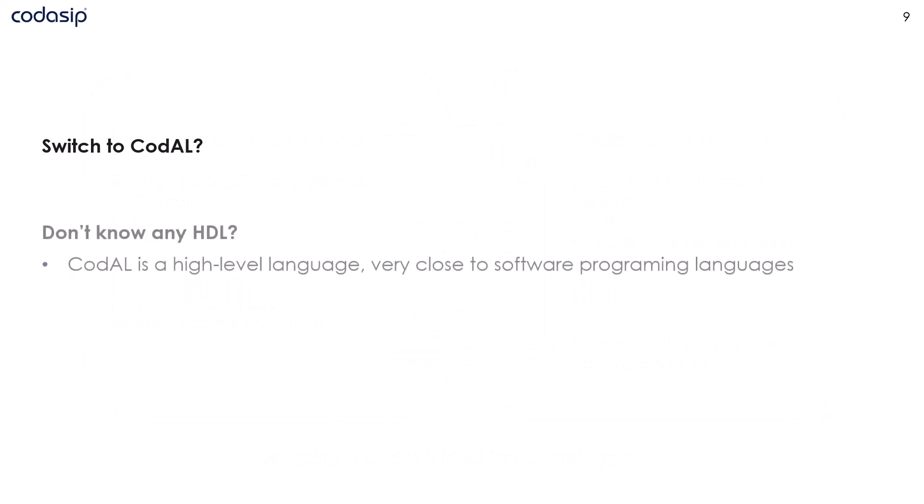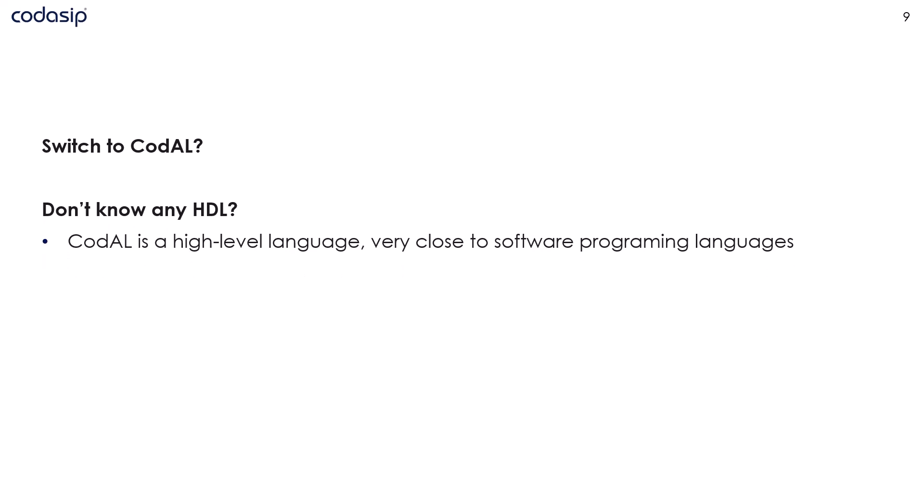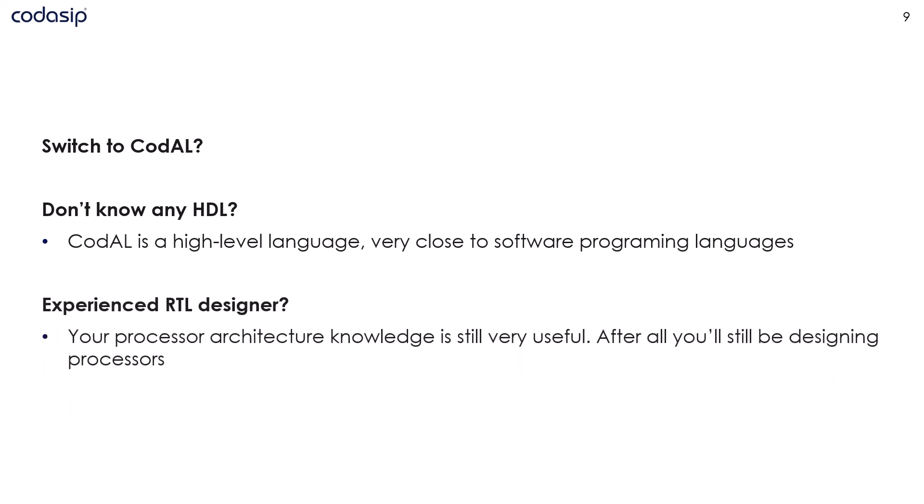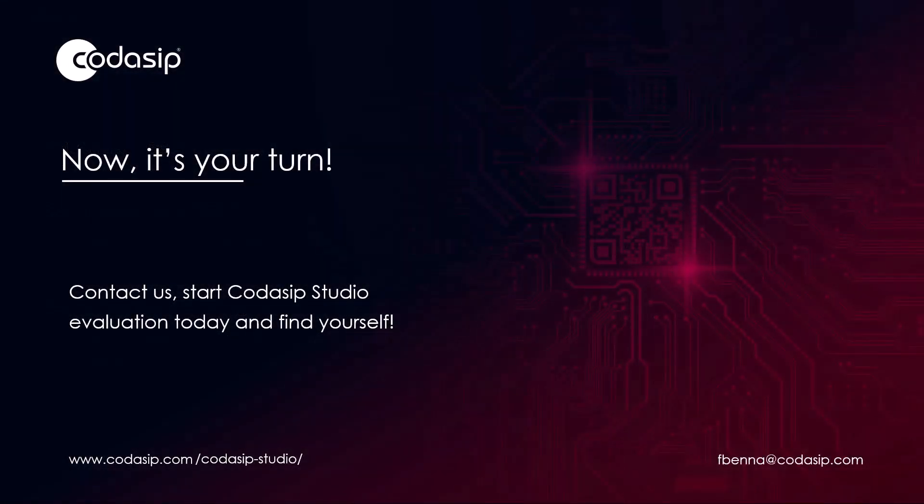So should you design your next processor in Codal? If you do not have a lot of experience designing in HDL but need a custom processor architecture, Codal is a perfect choice. Being a high-level language with a lot of similarities to software programming languages like C, you will learn it very fast. Also with Codasip, you don't need to implement the whole processor from scratch — we can provide you a complete processor Codal model which you can fine-tune for your software. Having a lot of experience in RTL design is a clear benefit as well. In Codal you still design a processor architecture, and the more you understand it, the more effective an implementation you can create. With Codal, you will however create not just the hardware implementation, but also the software toolchain and the verification environment at the same time. The best way to see how Codal and Codasip Studio can help you is to evaluate it.